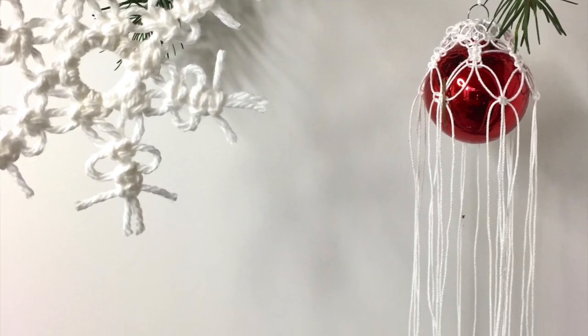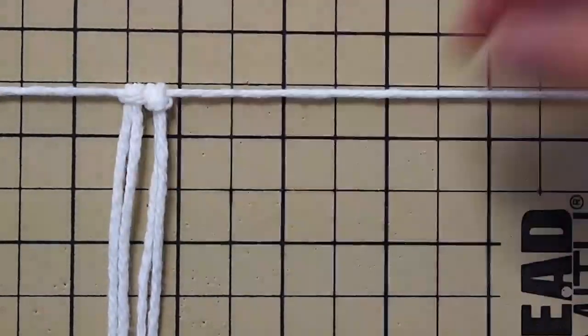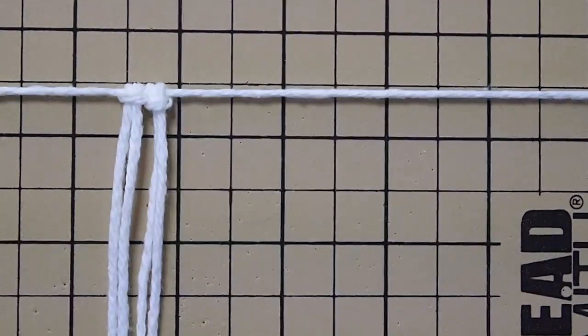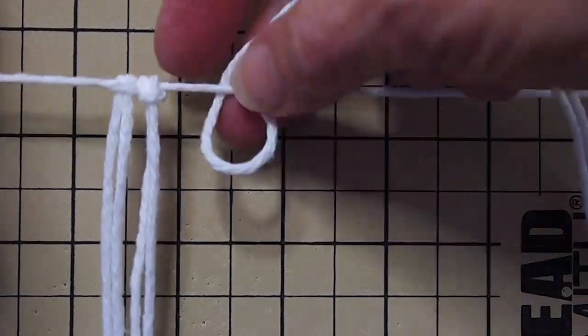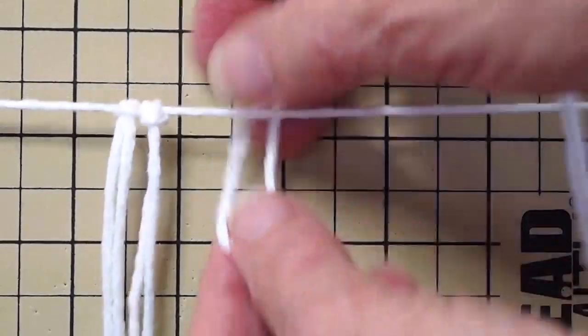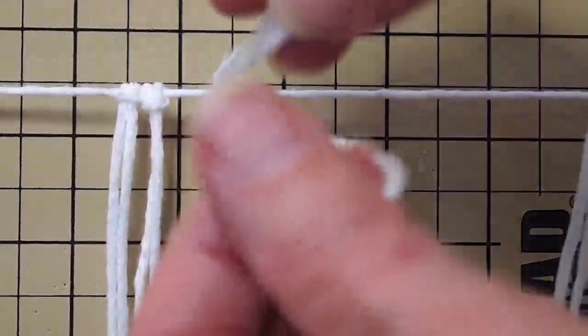Hi, this is Bonnie with Knots and Needles, and today I thought maybe I would make a couple of snowflake Christmas ornaments, maybe inspire someone to try it. So I've cut my cords between 14 and 20 inches long.